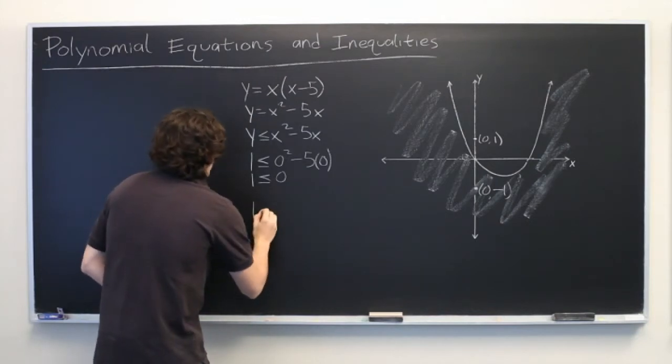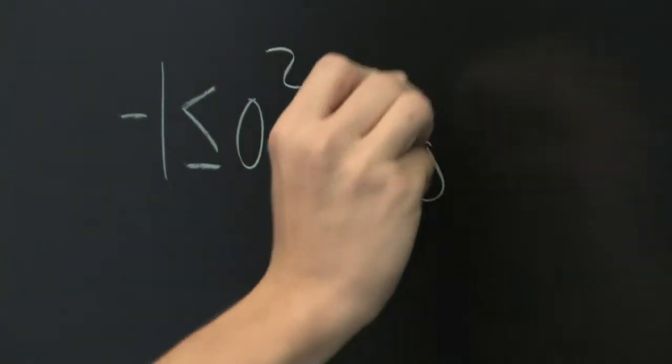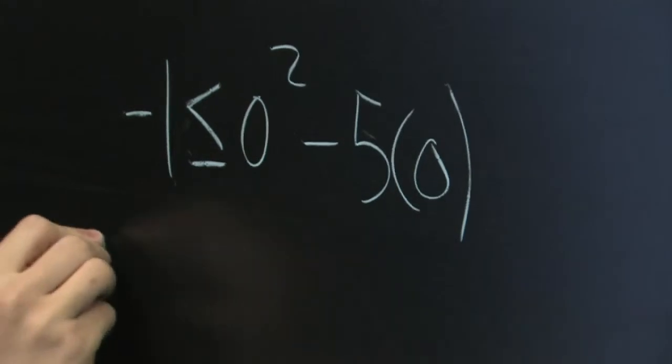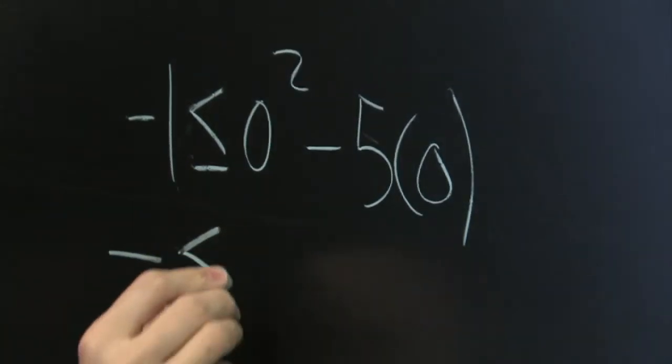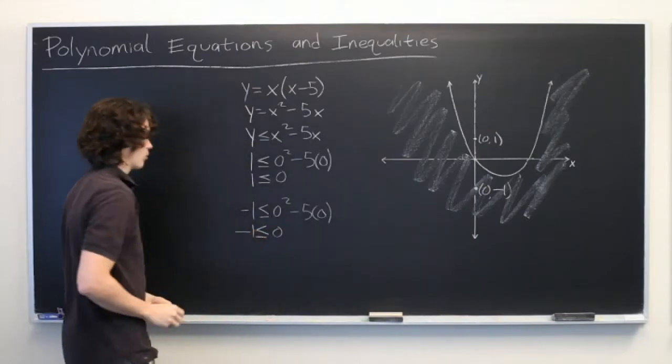So we plug it in again. Negative 1 is less than or equal to 0 squared minus 5 times 0. Again, this reduces to negative 1 is less than or equal to 0, which is obviously true.